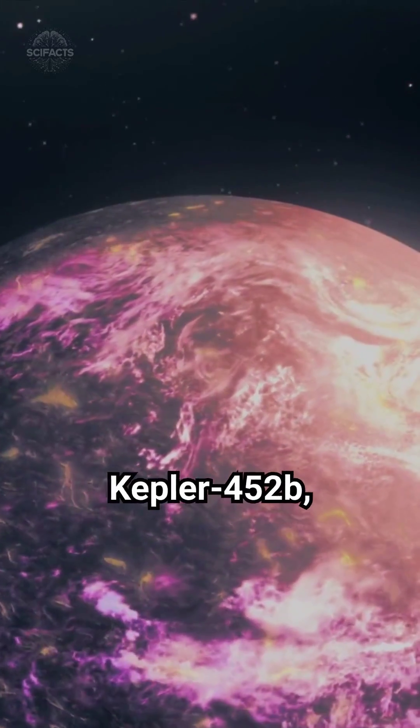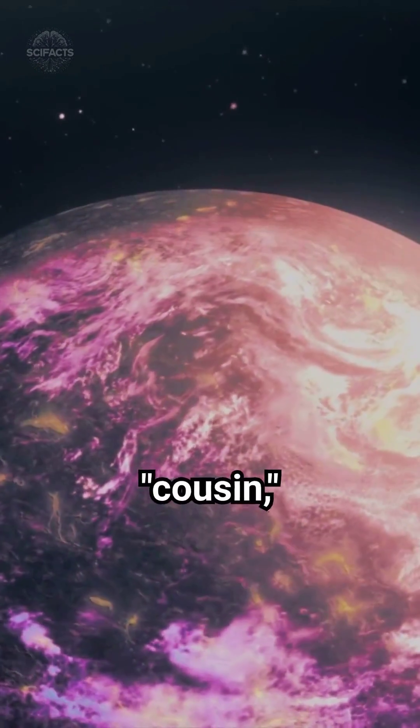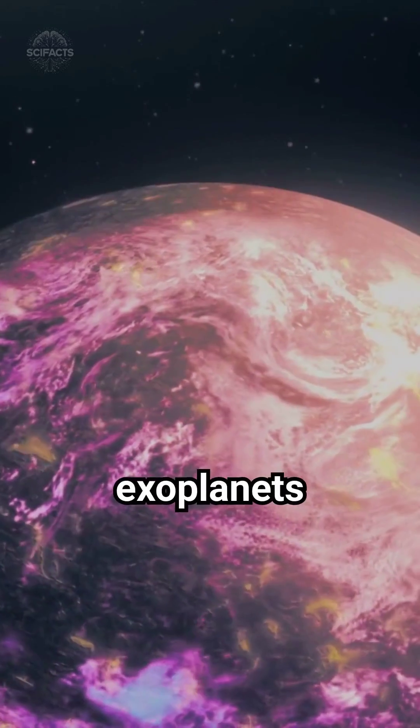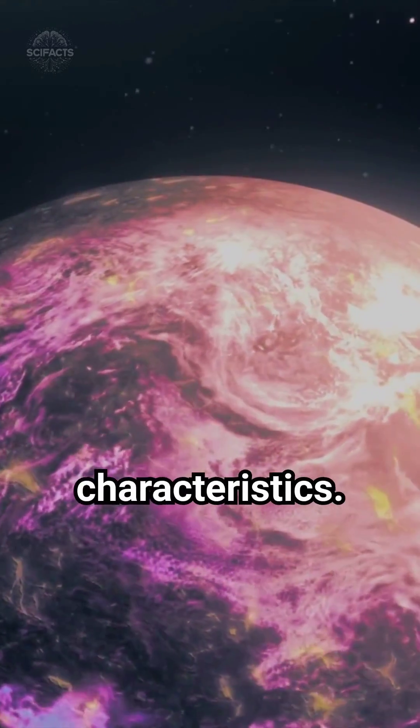Kepler-452b, often referred to as Earth's cousin, remains one of the most intriguing exoplanets due to its Earth-like characteristics.